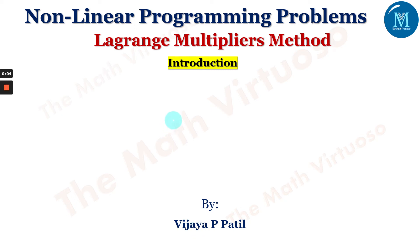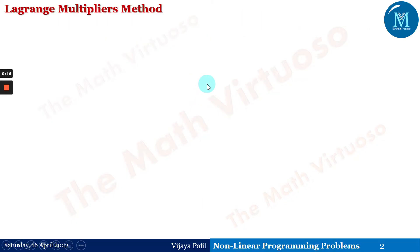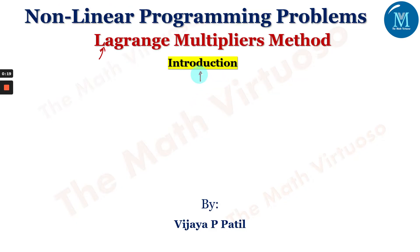Hello and namaste. In continuation with nonlinear programming problems, after the detailed discussion on the Karush-Kuhn-Tucker conditions, we will be moving ahead with the Lagrangian multipliers method. In this session, we will introduce this method. In general mathematical optimization, the method of Lagrangian multipliers is a strategy for finding the local maxima and minima of a function subject to equality constraints — that is, subject to the condition that one or more equations have to be satisfied exactly by the chosen values of the variables.